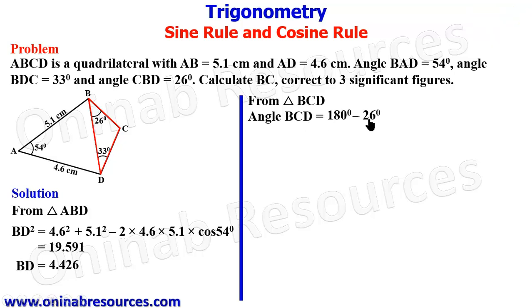Angle BCD will be 180 degrees minus 26 degrees minus 33 degrees, because sum of angles in a triangle is 180 degrees, and this gives 121 degrees.